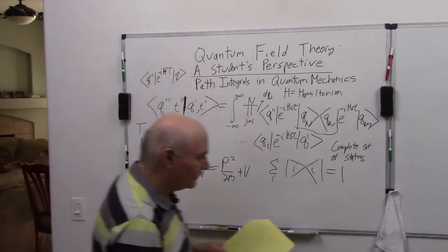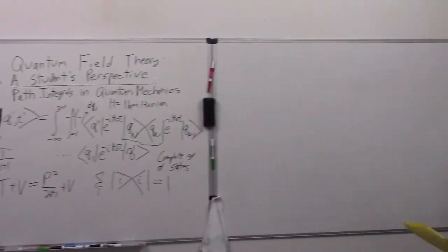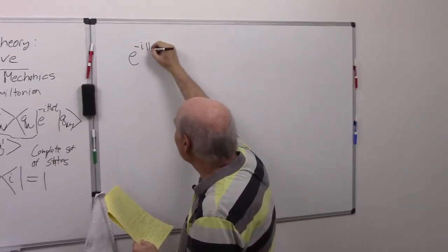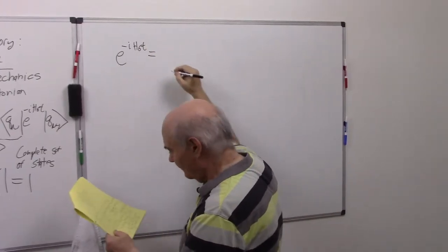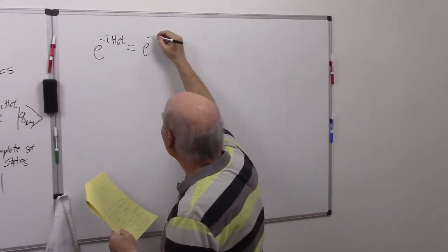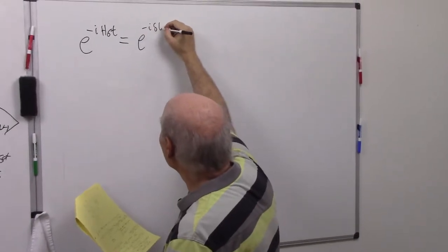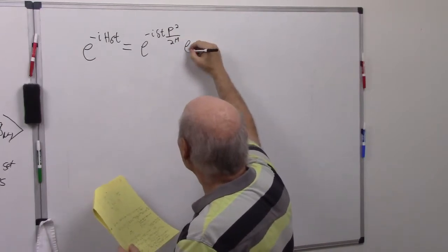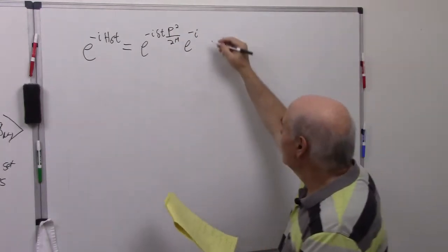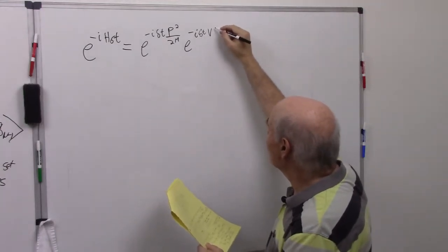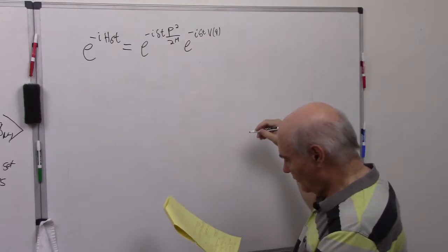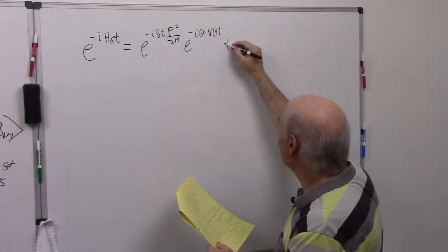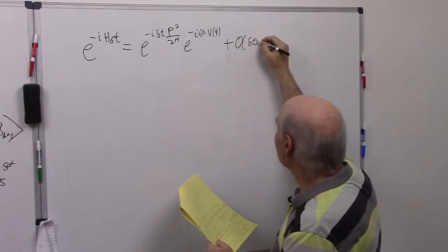So the first thing we should notice is if I have e to the minus i h delta t, this can be written as e to the minus i delta t p squared over 2m times e to the minus i delta t V.